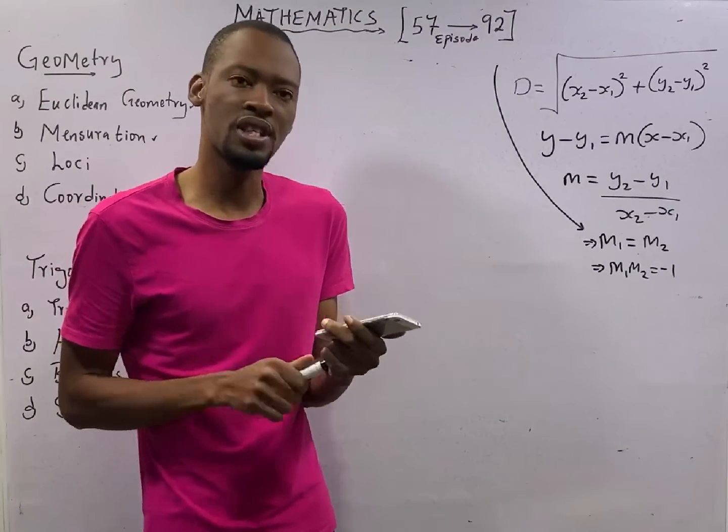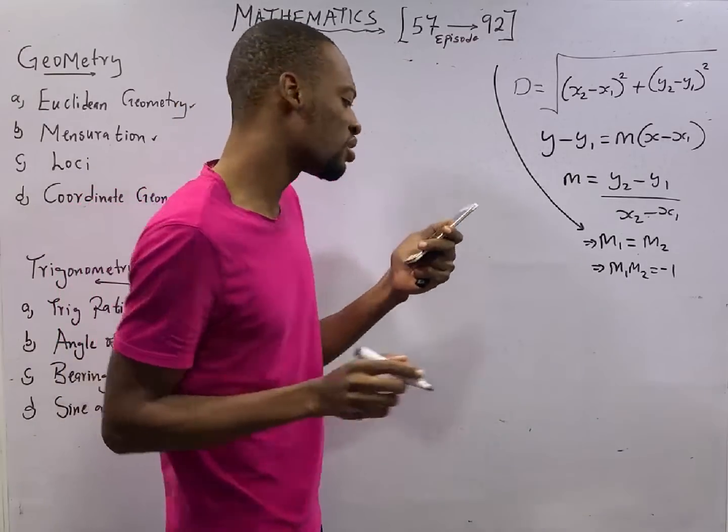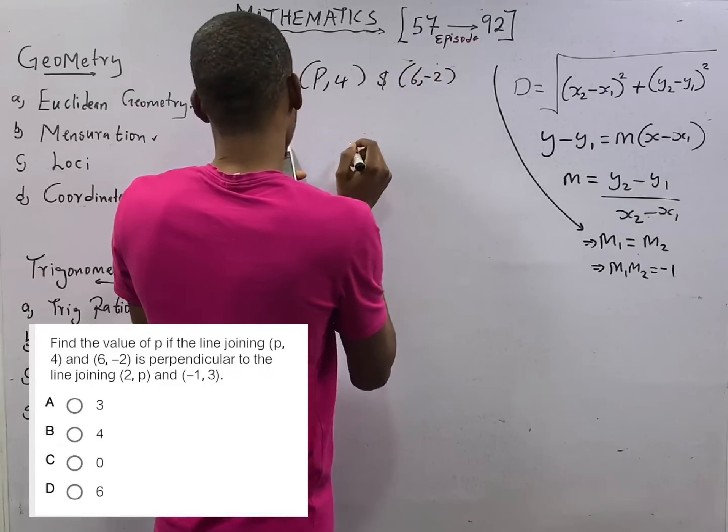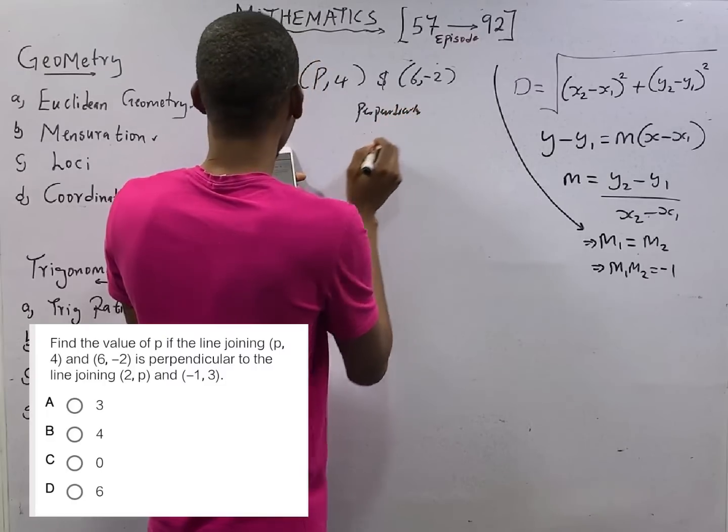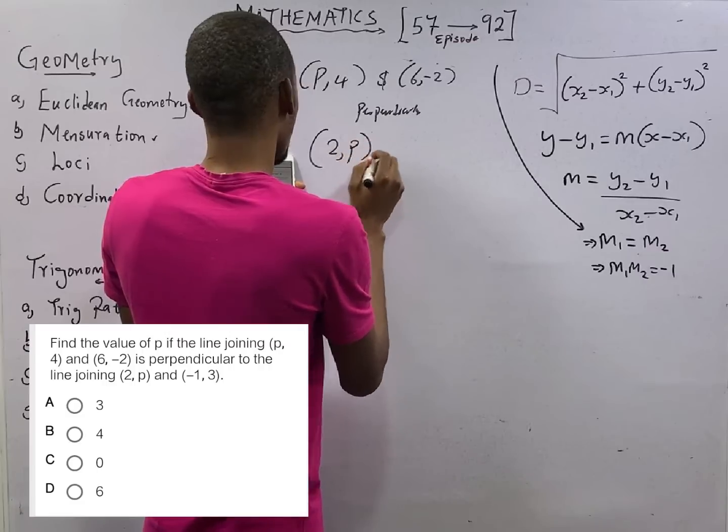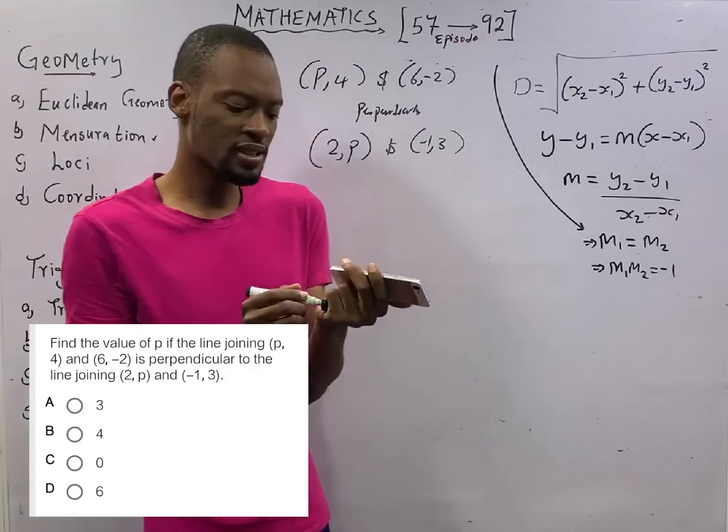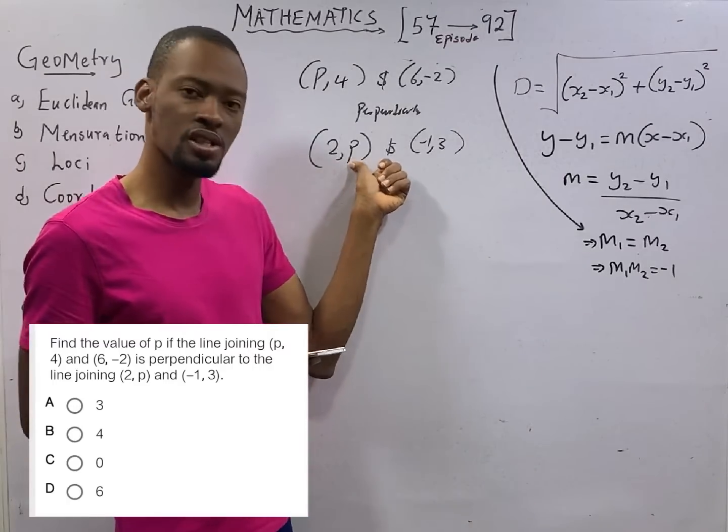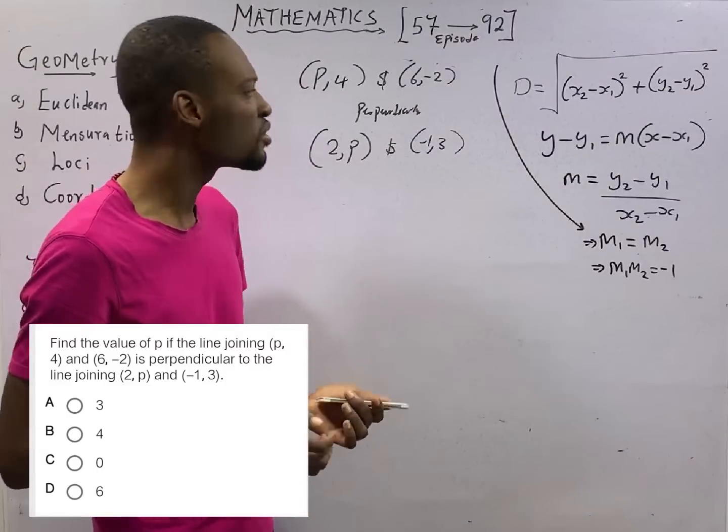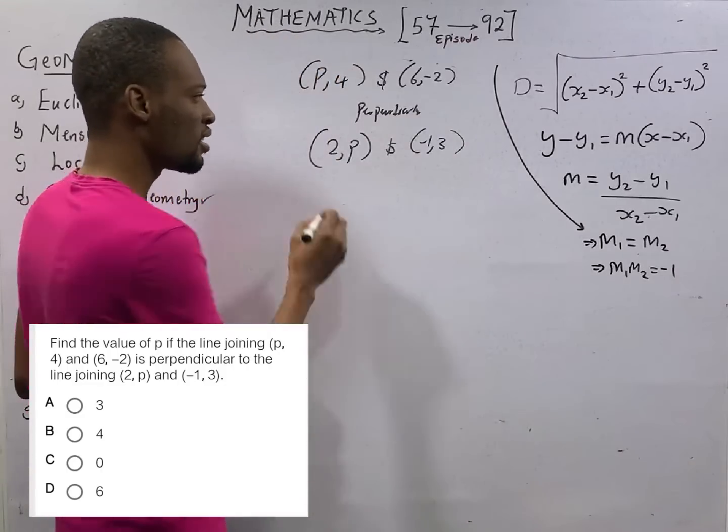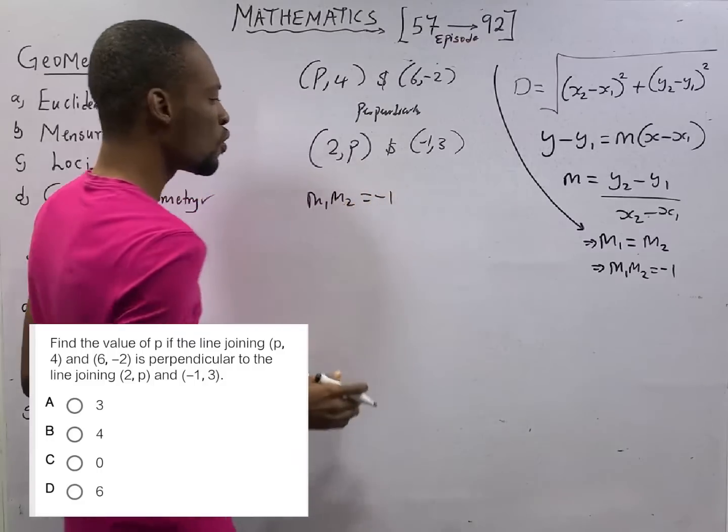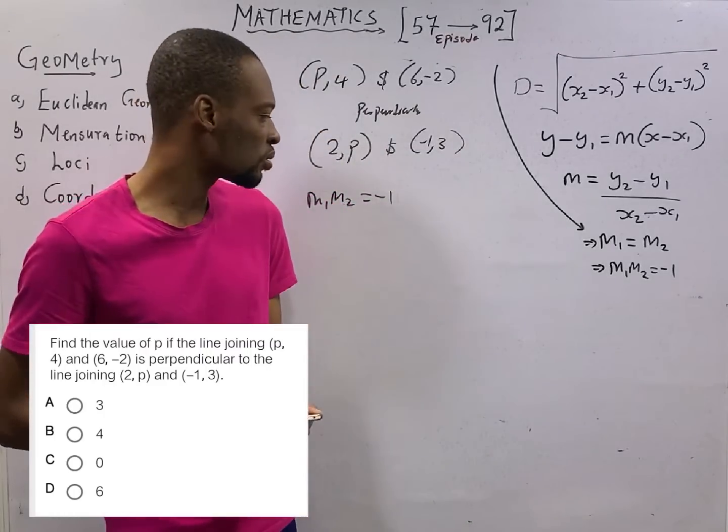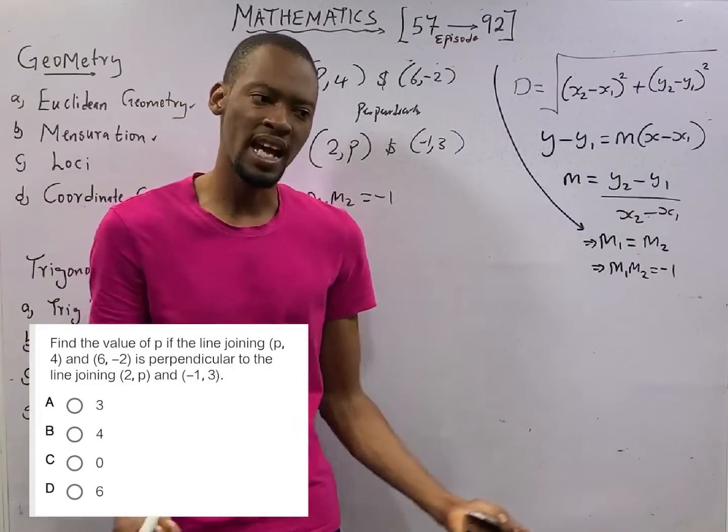Now look at this last question for this episode. It says find the value of p if the line joining (p, 4) and (6, minus 2) are perpendicular to the line joining (2, p) and (minus 1, 3). So we are told that this line and this line are perpendicular. The question is find the value of p. We are not asked to look for equation of line. Anytime you see a question like this, have in mind that if two lines are perpendicular, m1 times m2 equals minus 1.